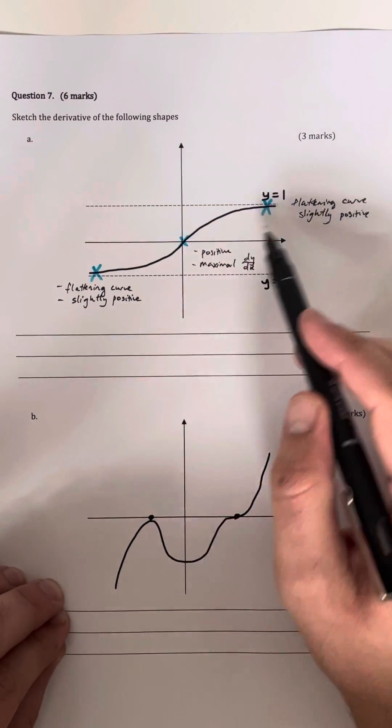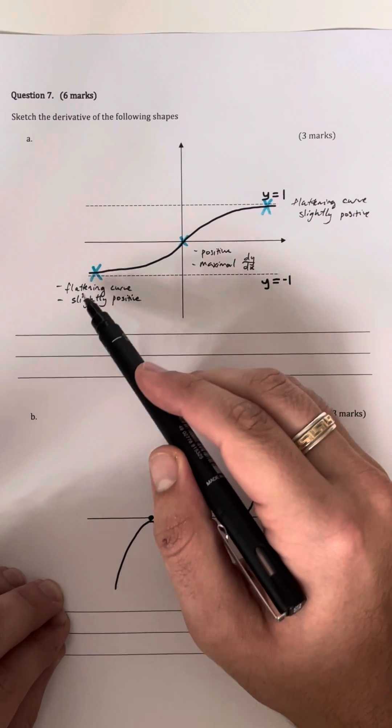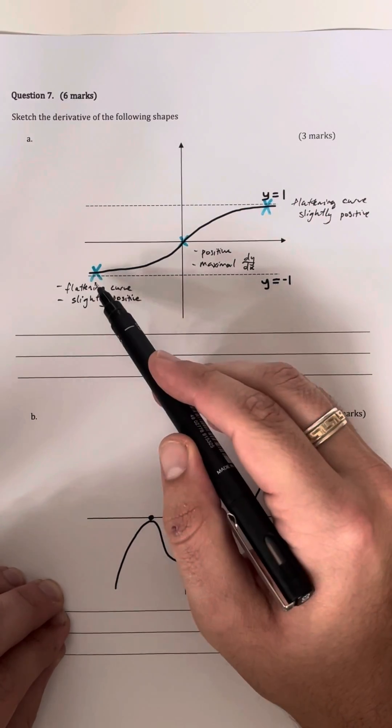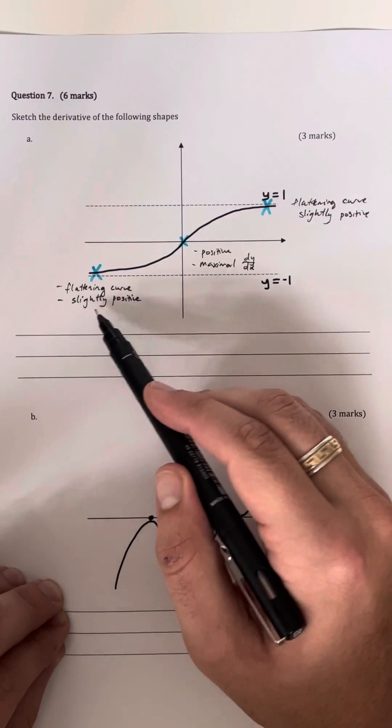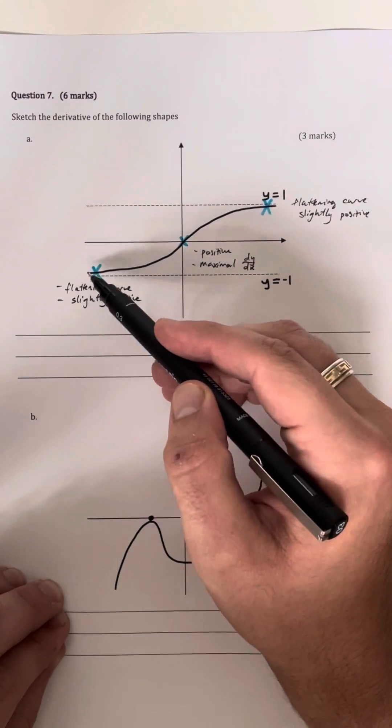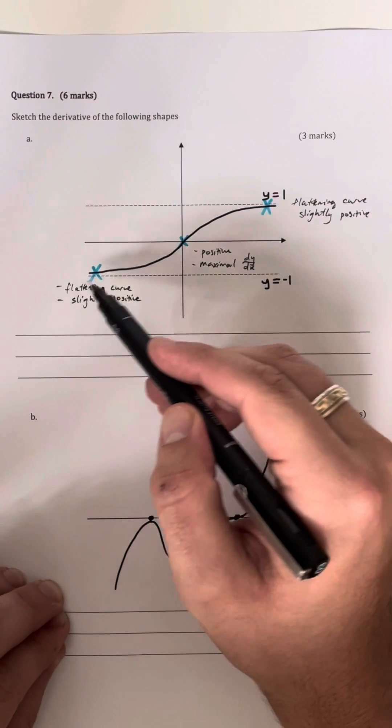So I've noted down some key points and I've just given a bit of a description. To the far left we have a flattening curve because we're asymptoting towards y equals negative one, but we can see we're actually slightly positive because we still have a positive gradient because we're getting closer to the asymptote as we go left.